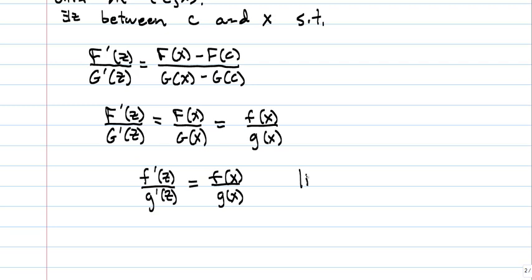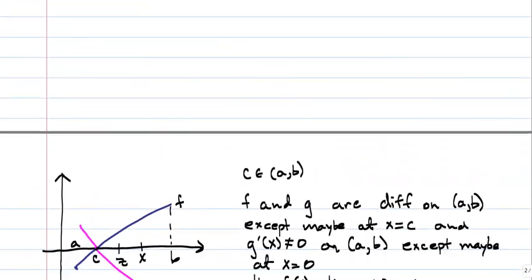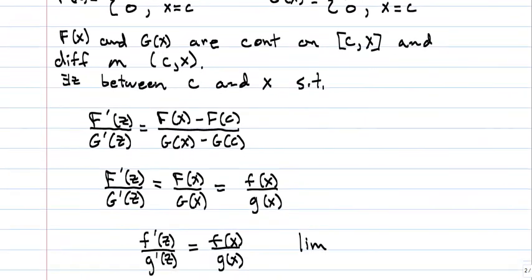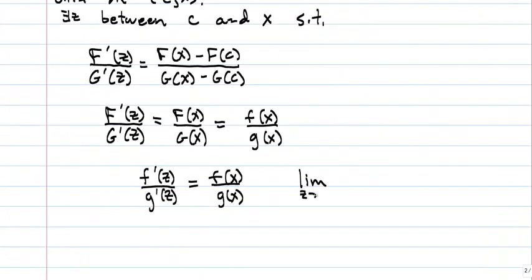Now, I'm going to take the limit on the left. Now, I'm going to do this. I'm dealing with a Z here, so I'm going to let Z go to C. And then on the limit on the right, I'm going to let X go to C. But you can see they're approaching the same thing. The limits are going to be the same. In other words, letting Z go to C or letting X go to C, you're going to get the same limit. So now, I've got the limit as Z goes to C, and that equals the limit as X goes to C. And we already know that this limit exists. F prime of Z over G prime of Z. The limit as Z goes to C, and that equals L.